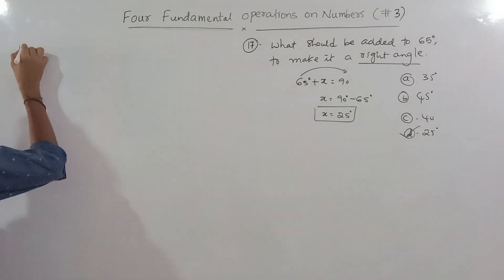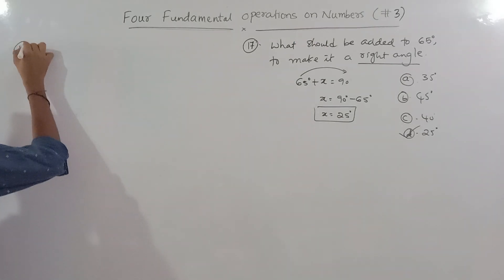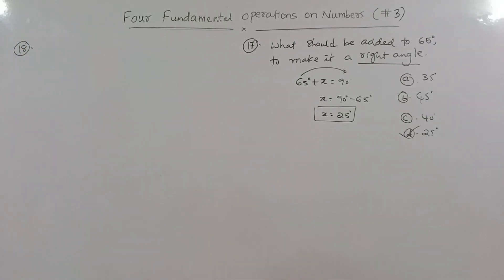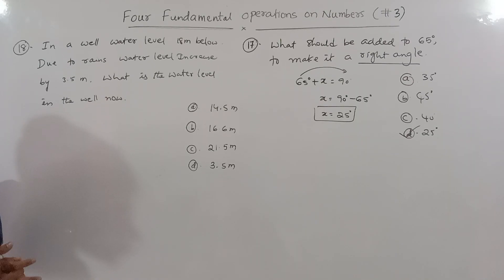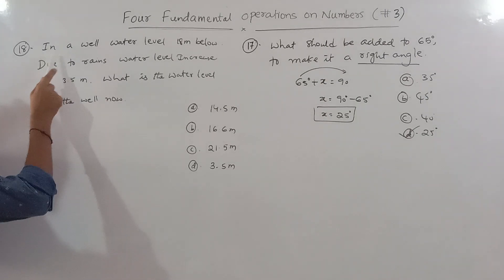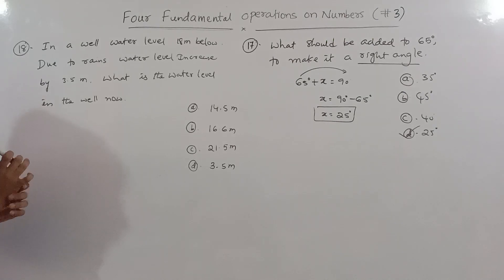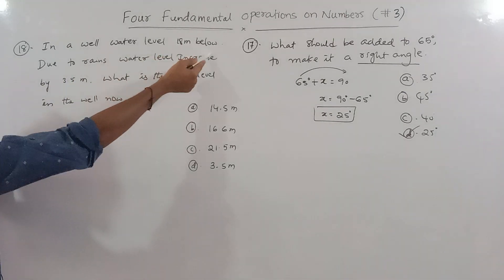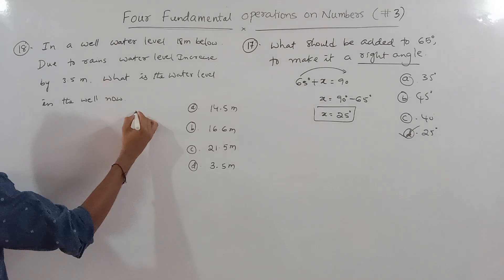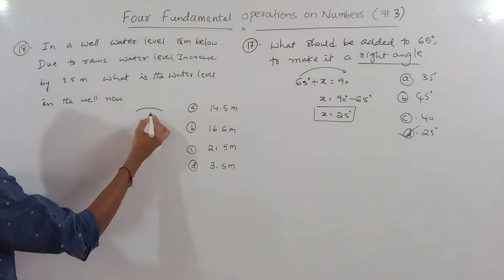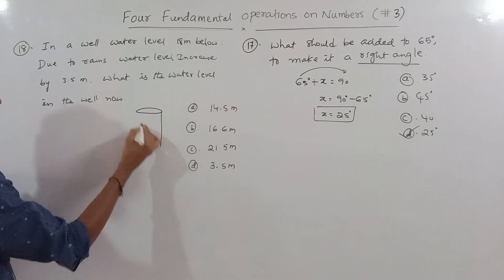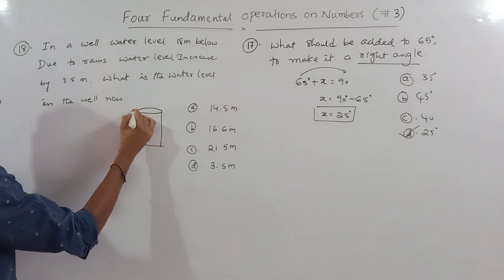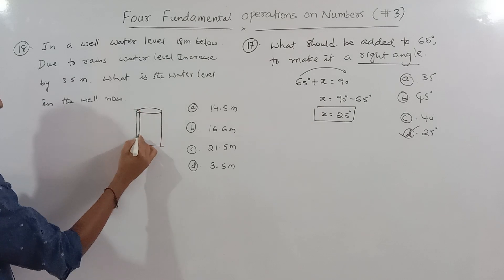Next question 18: if you want to add a number to 75 degrees to make it a right angle, then 90 − 75 = 10 degrees. So you will add 10 degrees to make it a right angle.